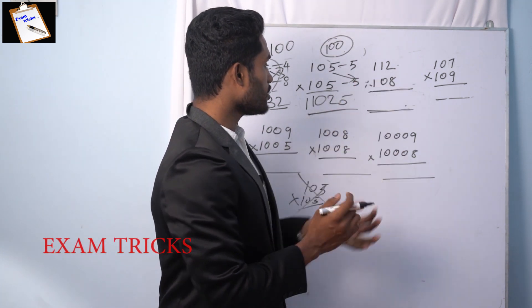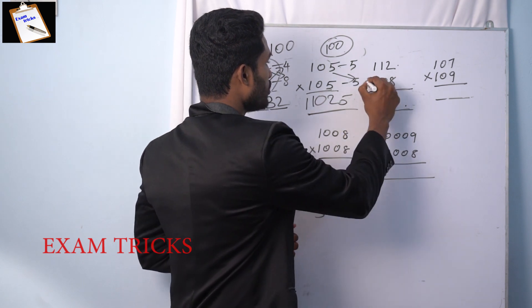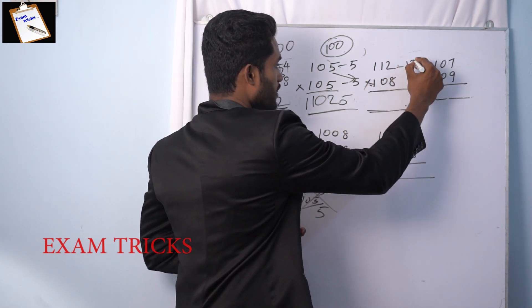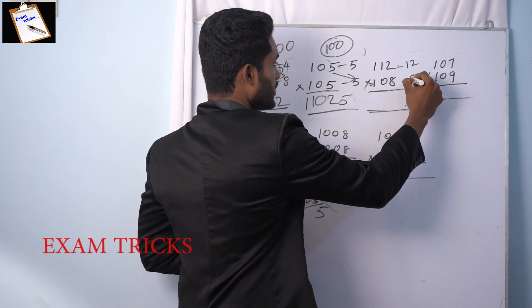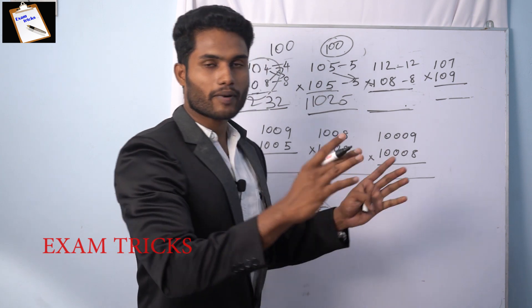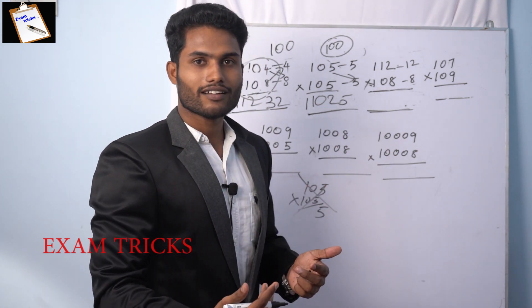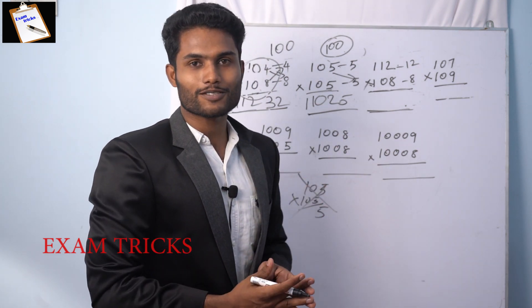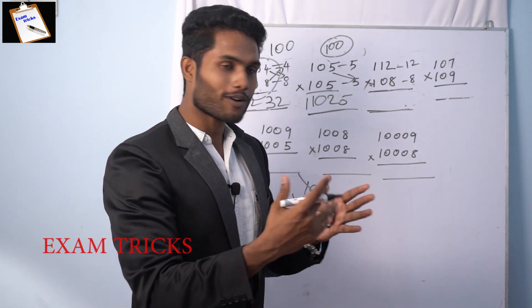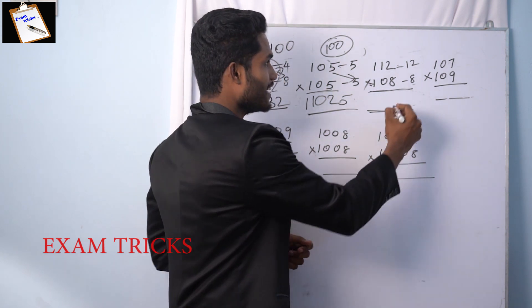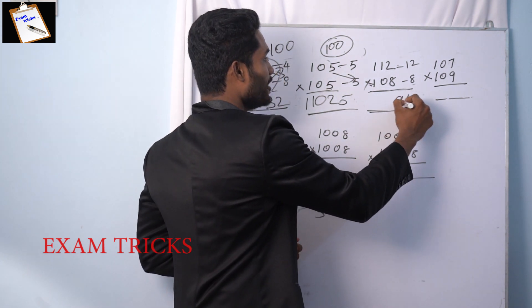Then, 112 into 108. The difference from 100 is 12 and 8. This difference: 12 into 8 equals 96. Then 102 plus 8, add in cross. The answer 12096 is absolutely correct.